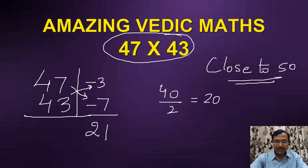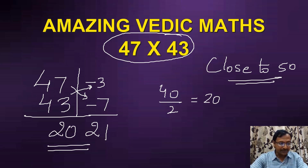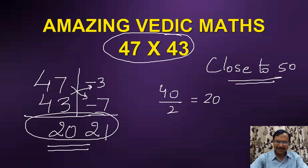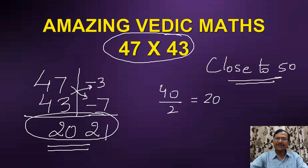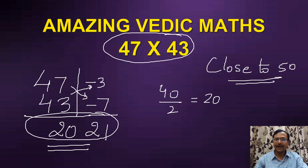So 20 forms the remaining part of my answer and the final answer for 47 times 43 is 2021. Amazed? Surprised? You can surprise your friends — take some random examples and try to solve this. I'm sure you're going to get an accurate answer every time.